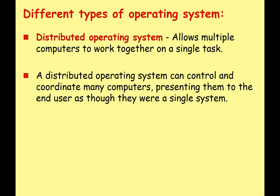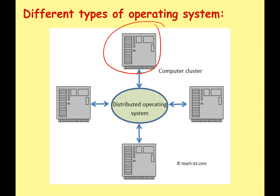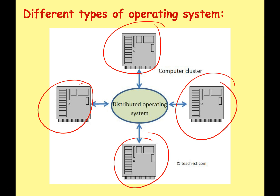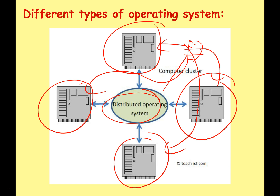The next OS type is the distributed operating system. This allows multiple computers to work together on a single task. A distributed OS can control and coordinate many computers, presenting them to the end user as if they were a single system. These computer systems might be in different geographic locations — close together or far apart. The OS ties them all together, takes a job, chops it up, sends the pieces to different computers for processing, and when they're finished, collects the results and presents them.